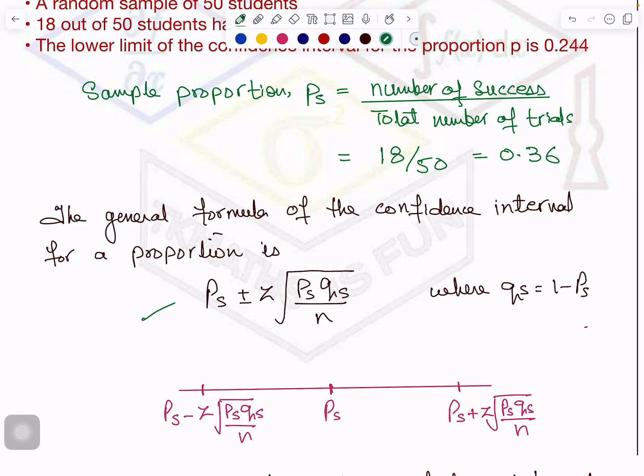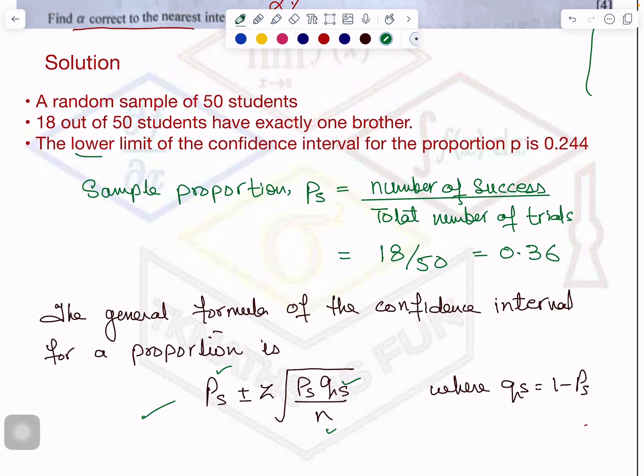And the general formula for calculating the confidence interval for a proportion is here. You can see that now in this formula, PS, QS is basically 1 minus PS. PS is for sampling proportion and n is the total.